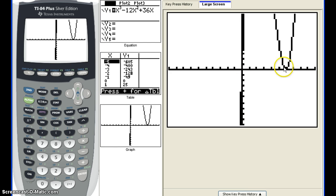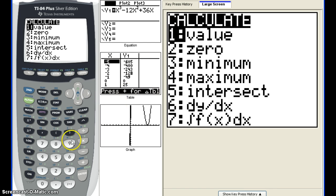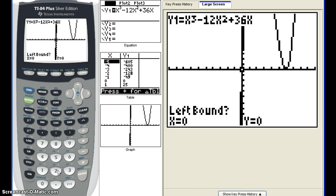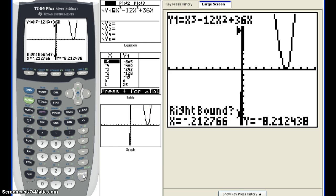And we also have an x-intercept here. The best way to find those is to hit second trace. And we're going to hit 2 for zero. And then we need to find a left bound and a right bound. So cursor to the left. We think we should have one at zero. So this is below.